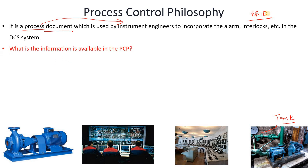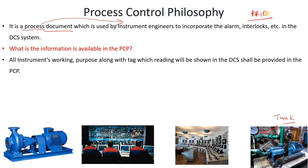The information available in the process control philosophy includes all instruments seen in the P&ID that will be read in the DCS — for example, PT, LT, TT, control valves (level control valve, flow control valve, pressure control valve), and analyzers.